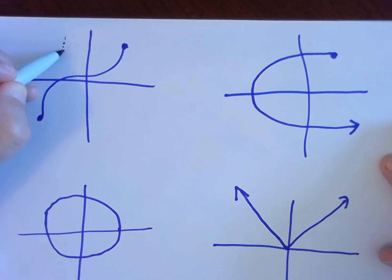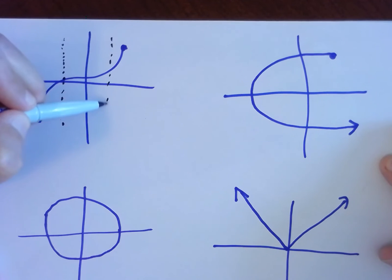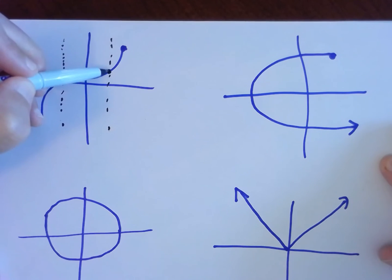So, imagine, say, for example, this vertical line right here. That hit my graph once, right there. This vertical line hit the graph once, right here.